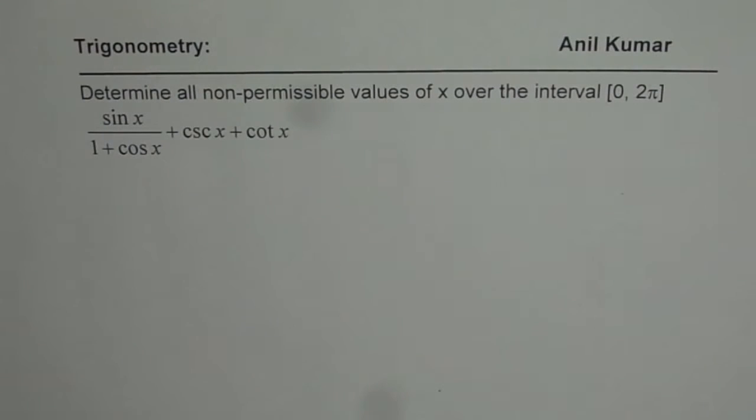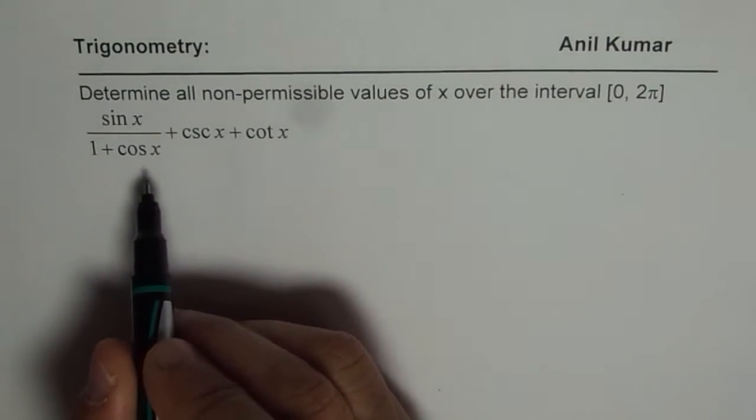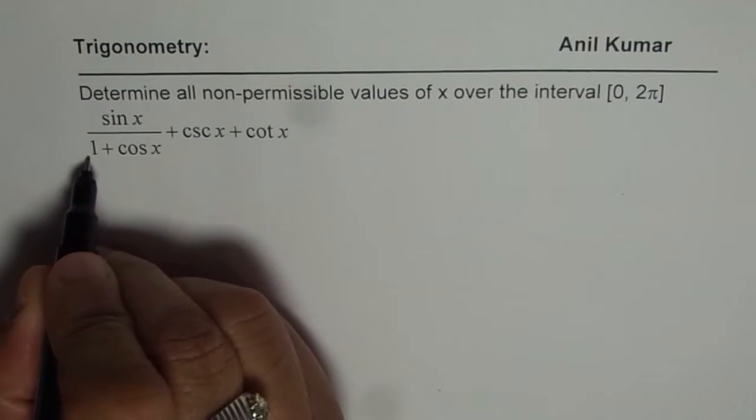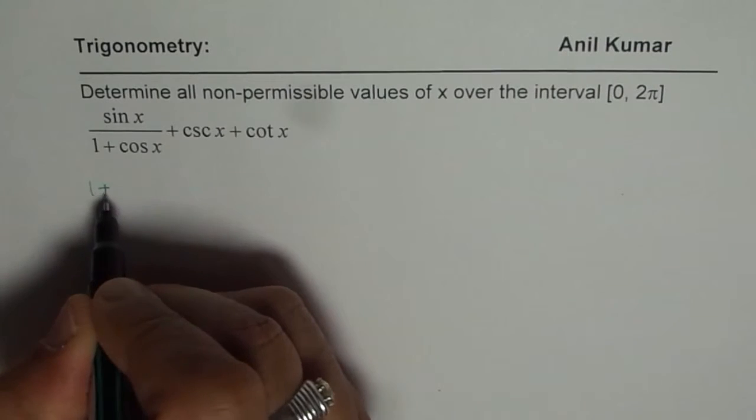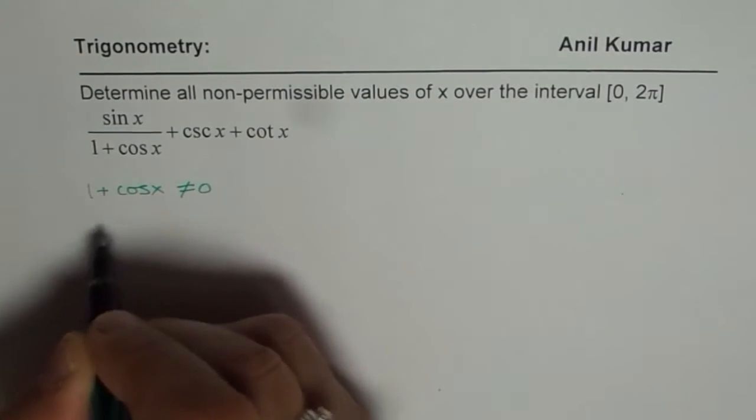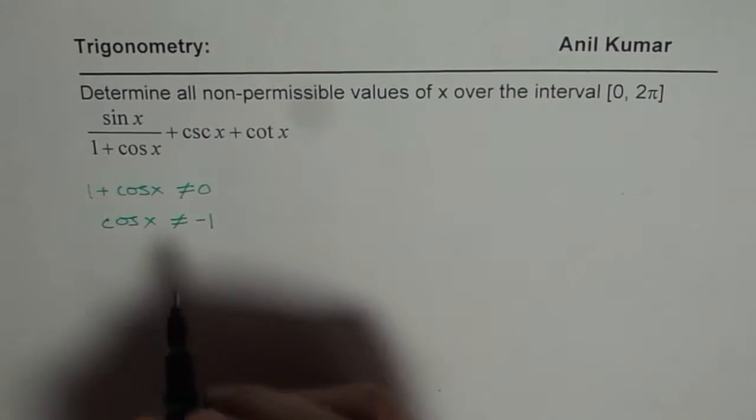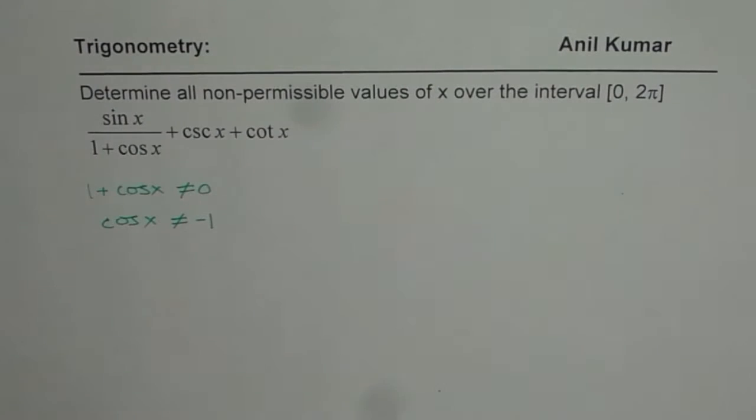Now what are the restrictions on these trigonometric ratios? Remember denominator cannot be 0. So first restriction we can work on 1 plus cos x and that should not be equal to 0. That is to say cos x should not be equal to minus 1. Now when is cos x minus 1?